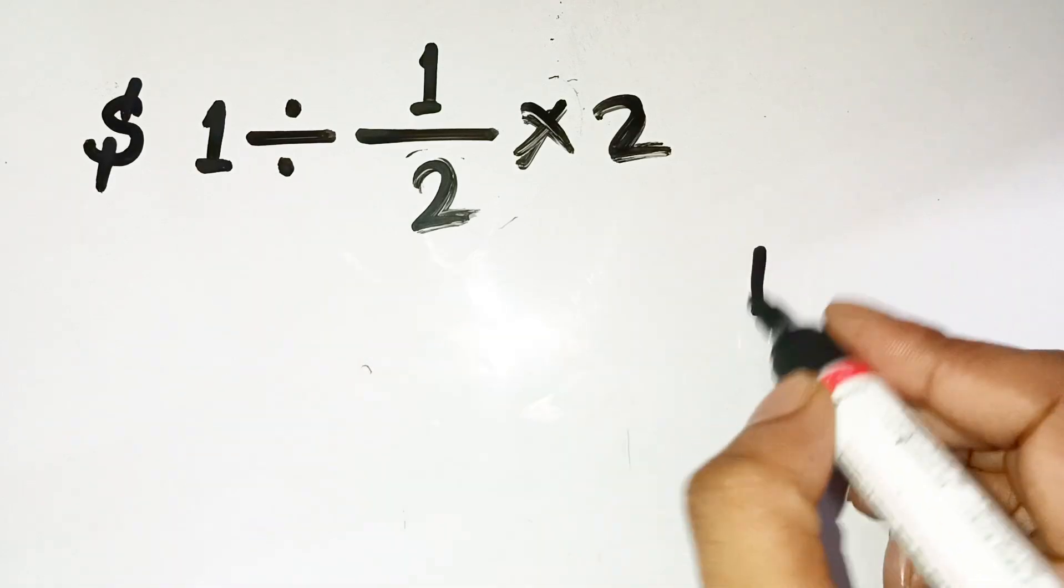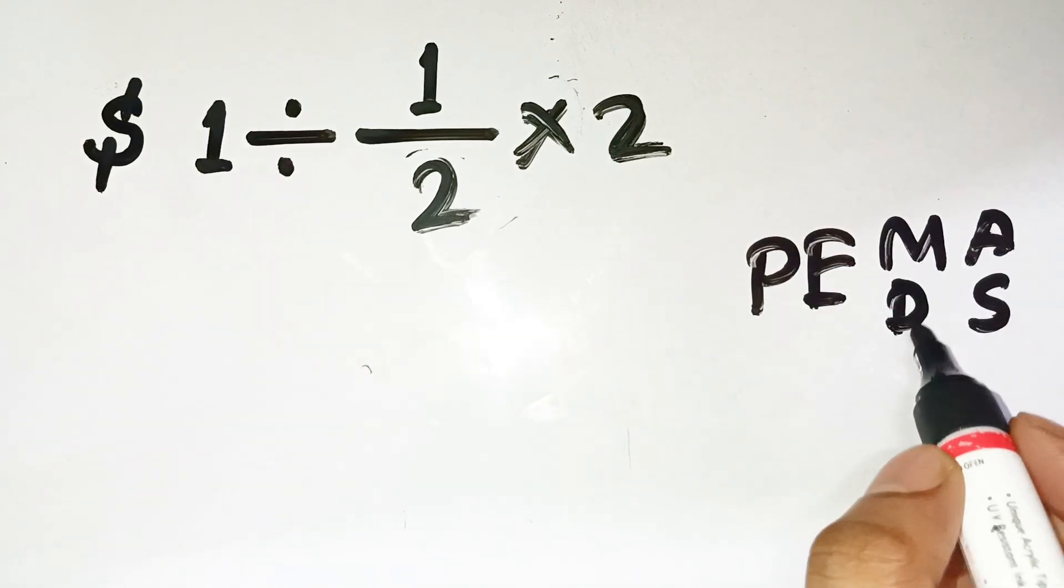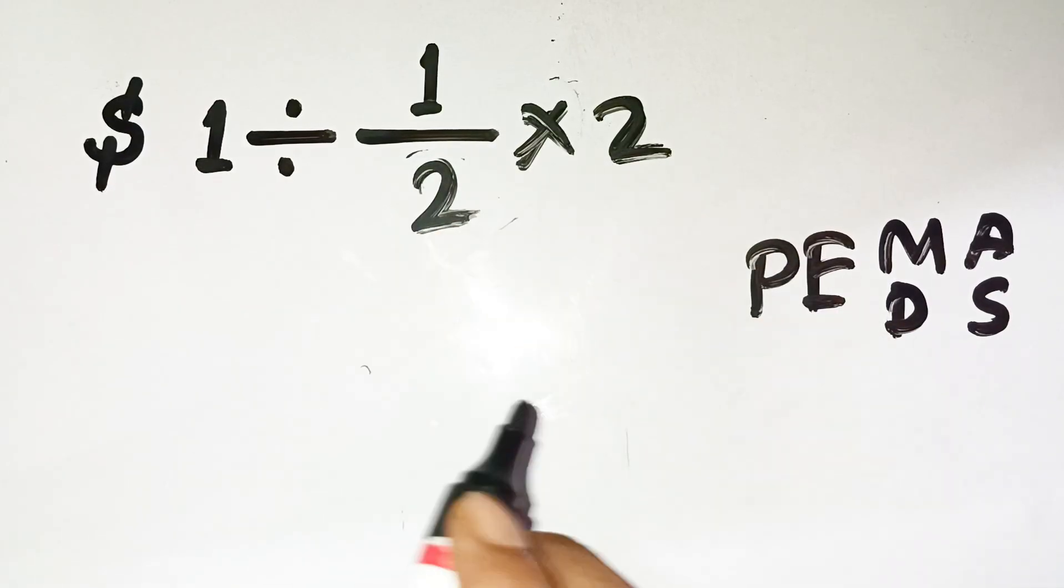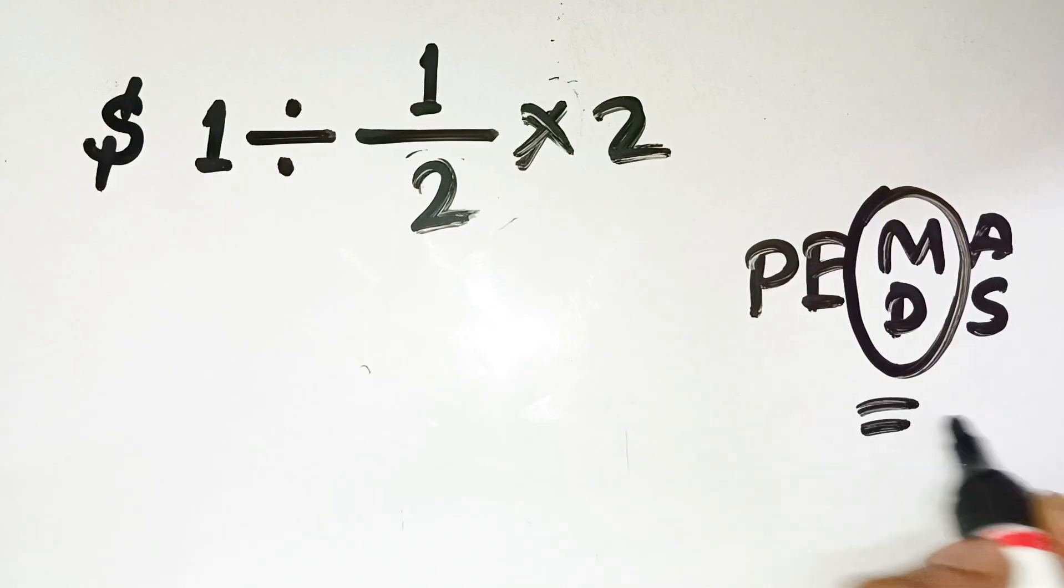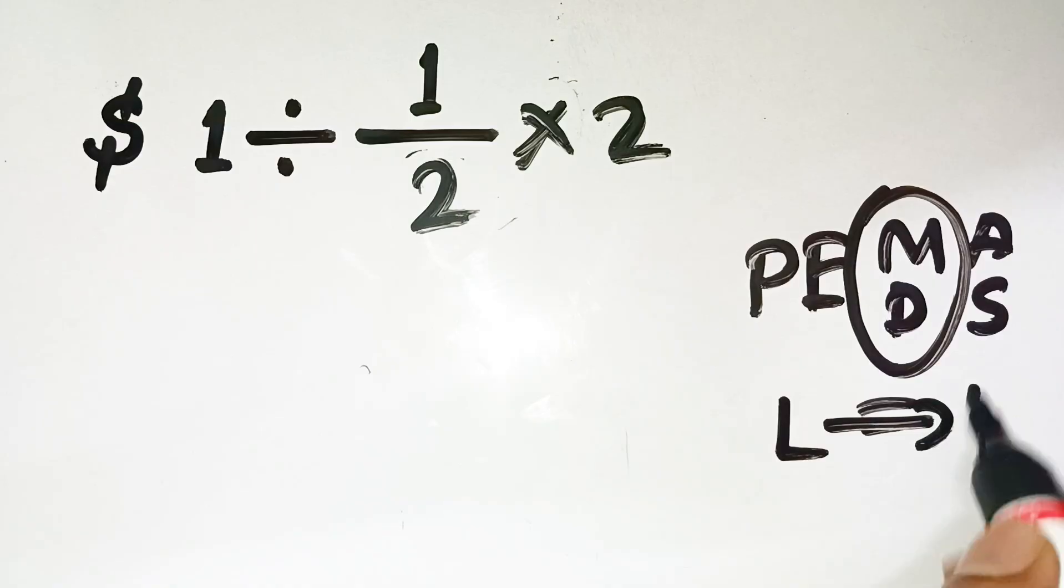We're following PEMDAS, which stands for Parentheses, Exponents, Multiplication, Division, Addition, and Subtraction. But here's the part most people forget: multiplication and division are equal priority operations. You don't do all the division first. You move left to right as they appear.